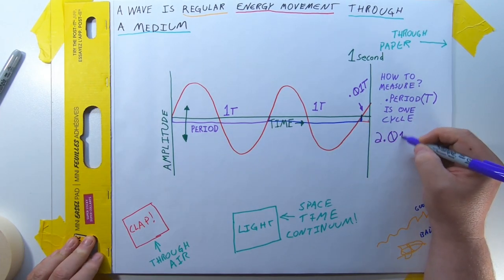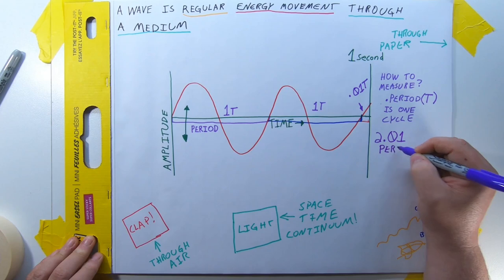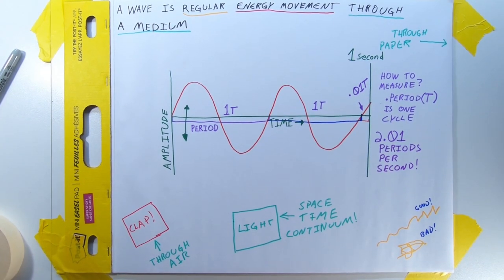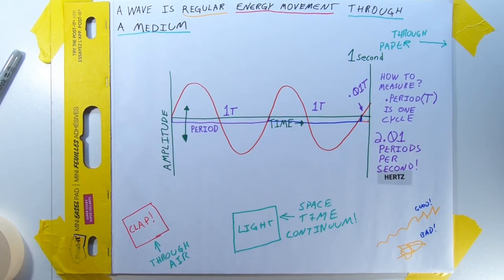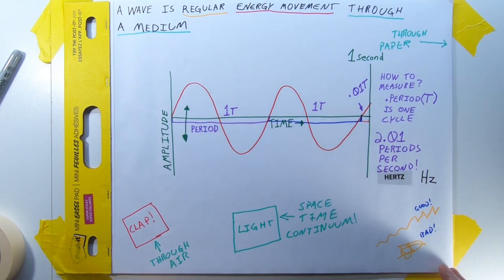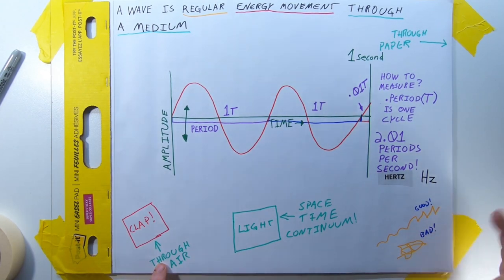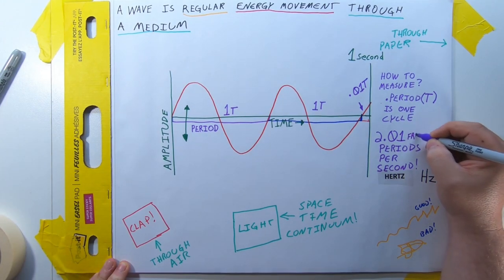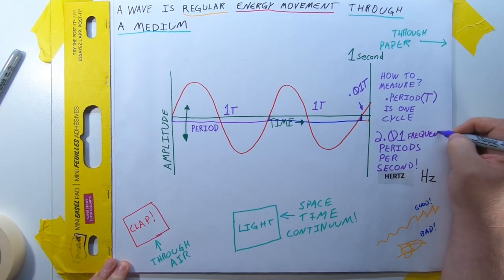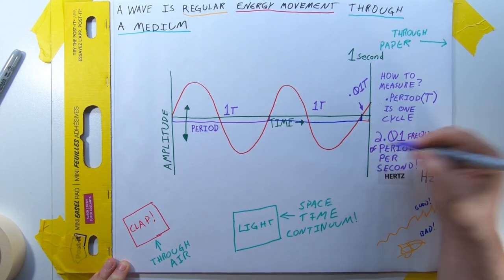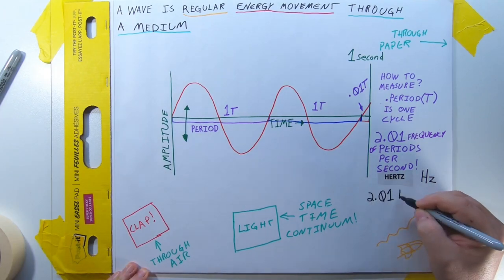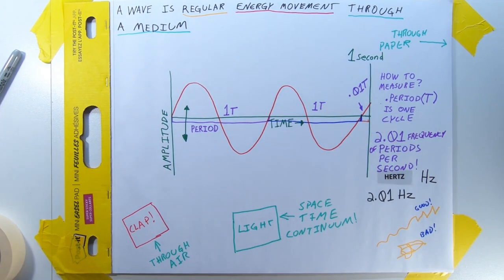Counting the number of cycles in our second long segment of wave, we come to 2.01 cycles or periods in a second. Believe it or not, there is an SI unit for counting the cycles of wave per second. It is the Hertz, named for a German guy who proved the existence of electromagnetic waves. The shorthand is HZ. So we are counting the number of cycles in a second, or in other words, the frequency of cycles per second. So ultimately, our frequency is 2.01 Hertz.